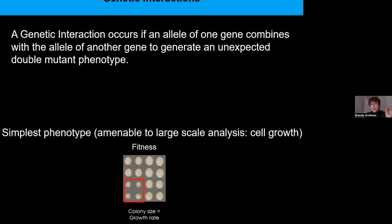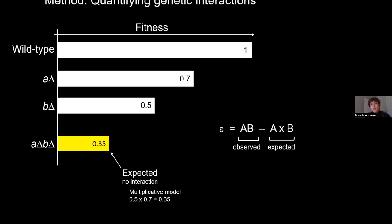By far the simplest phenotype to measure in a systematic high-throughput way is cell growth or cell fitness. In yeast this phenotype is particularly amenable to large-scale analysis because we can use colony size of strains grown on agar as a proxy for cell growth rate. We simply take pictures of yeast mutant arrays or double mutant arrays, measure colony size, and ask whether there is a deviation from what we expect based on the growth rate of the single mutants when we make a double mutant.